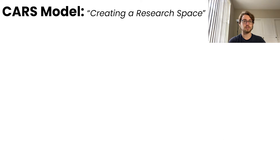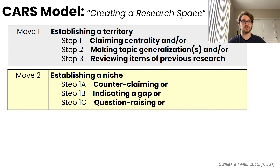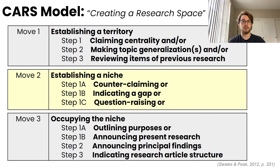One formal model to think about when organizing an introduction is the creating a research space or CARS model. In move one, a paper will establish the context in which the research has been conducted. This is written in general and reviews relevant previous research. In move two, the paper establishes its niche, the area for new research covered by this paper. Finally, in move three, the paper occupies that niche and discusses what has been done in the body of the paper.